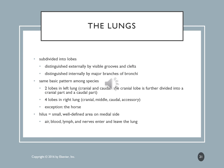The lungs are divided into lobes. The left lung has two lobes — a cranial and a caudal — and the cranial is further divided into cranial and caudal parts. The right lung has four lobes: cranial, middle, caudal, and accessory. There is a hilus, a small well-defined area on the medial side that allows blood, lymph, and nerves to enter and leave the lungs.